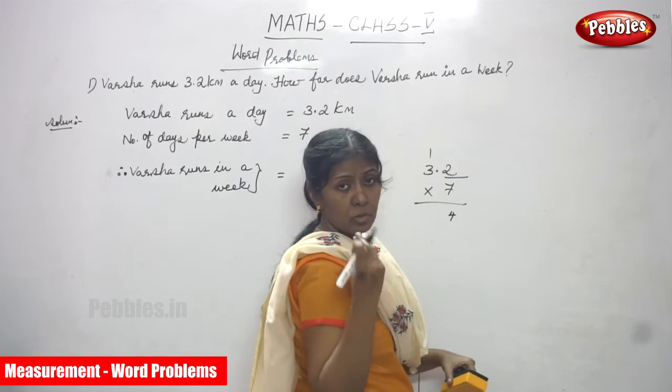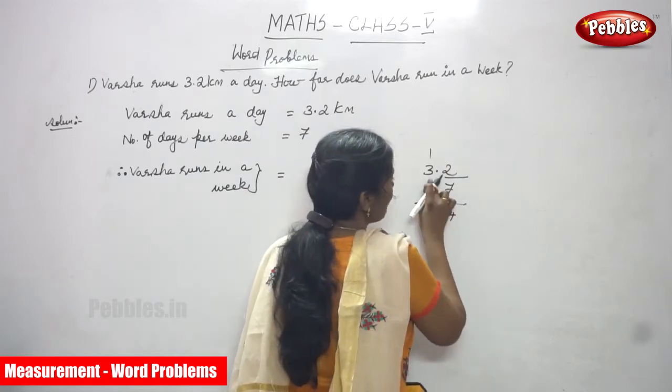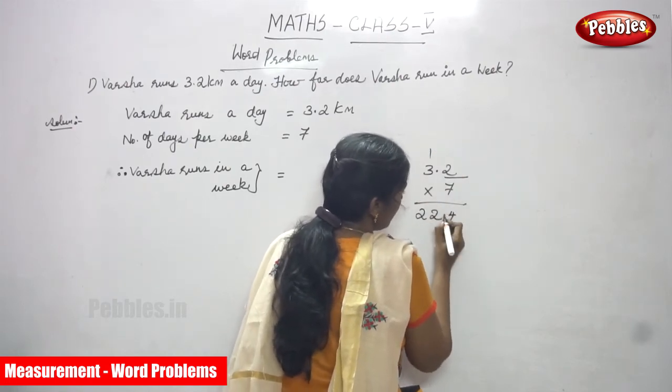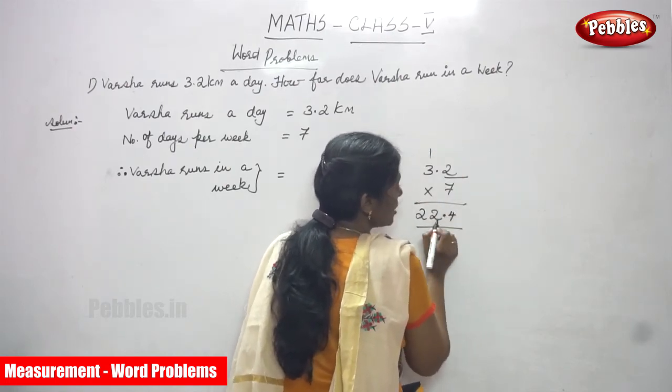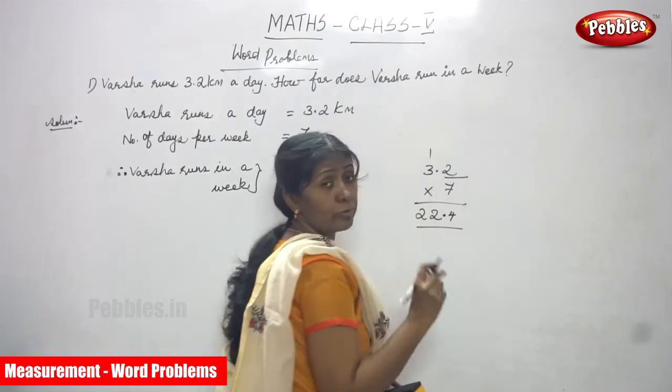Now the carry-on goes to the top of the whole part. That means 3 into 7, 21. 21 plus 1, 22. You have to put a point. That means 22.4. The answer is 22.4 kilometer.